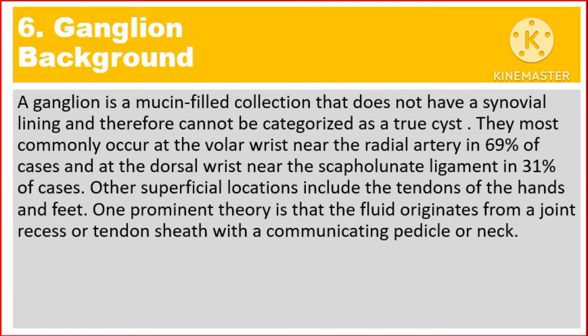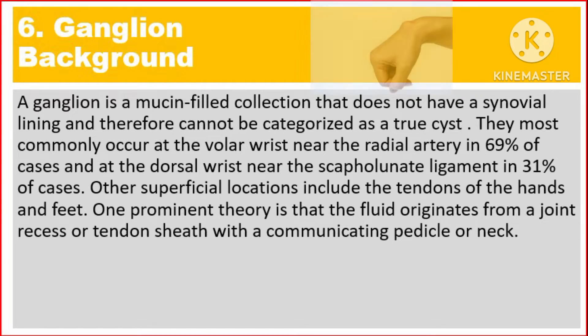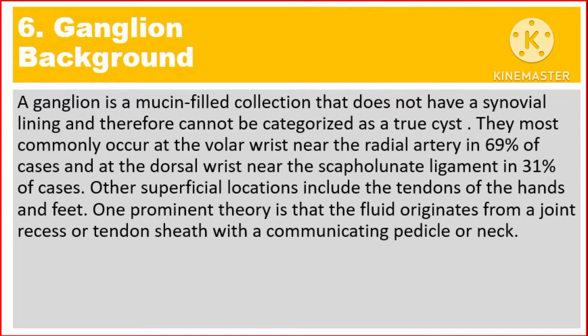Background: A ganglion is a mucin-filled collection that doesn't have a synovial lining and therefore can't be categorized as a true cyst. They most commonly occur at the volar wrist near the radial artery in 69% of cases, and at the dorsal wrist near the scapholunate ligament in 31% of cases.